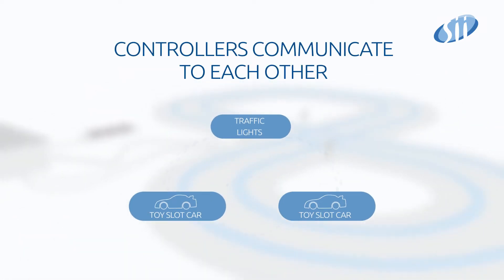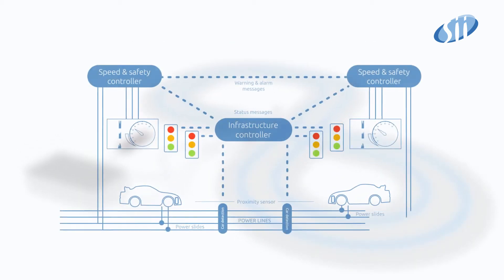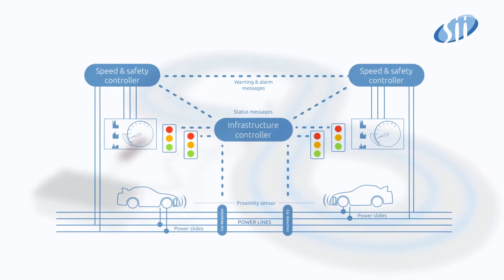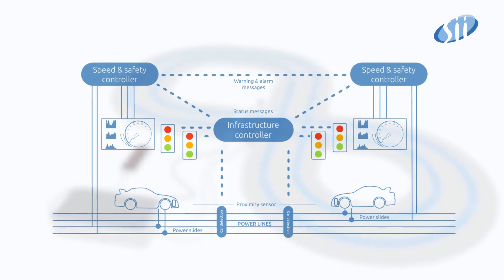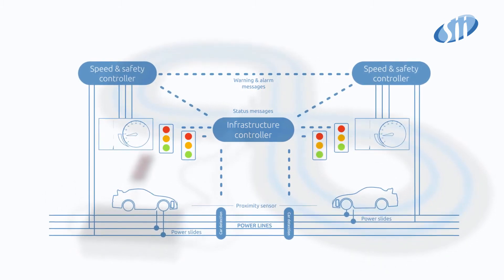Controllers communicate with each other to demonstrate car-to-car and car-to-infrastructure communication. Infrastructure is detecting cars approaching crossroads and, with help of car-to-infrastructure communication, broadcasting the current state of traffic lights.